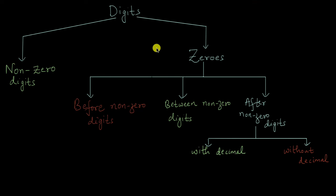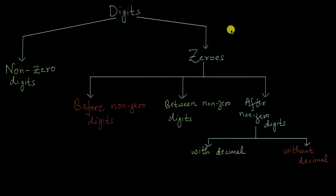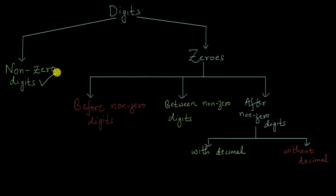In this video, let us look at the rules which help us determine which digits in a measurement are significant and which digits are not significant. First, let us look at all the non-zero digits. The rule is that any non-zero digit in a measurement is significant.